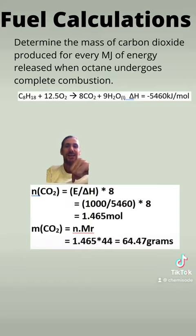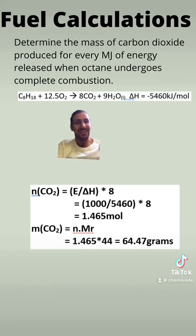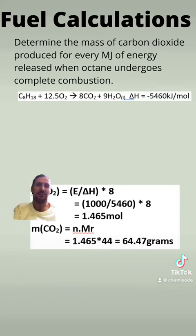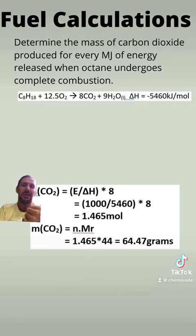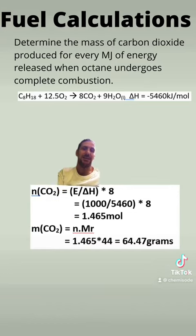And that way, we can work out the number of moles of carbon dioxide produced per megajoule. The energy here is 1000 because that's how many kilojoules one megajoule is. Because it says for every megajoule of energy, we're just going to say for every 1000 kilojoules of energy, that's the same number. So therefore, the number of moles equals 1000 kilojoules divided by 5,460 kilojoules per mole times 8. And therefore, there's our mole of carbon dioxide.